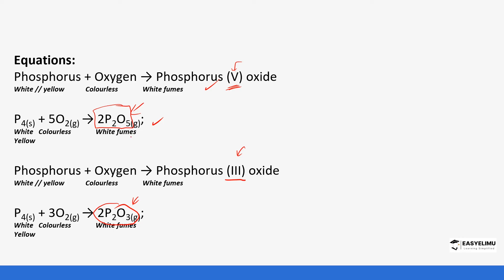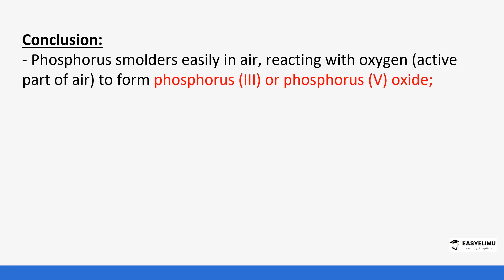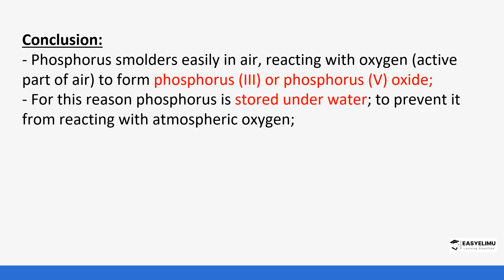So P₂O₅ is phosphorus(V) oxide and P₂O₃ is phosphorus(III) oxide — notice the 5 and the 3. These oxides dissolve in water to form phosphoric acids, which make the water acidic. This is the reason why phosphorus is usually stored under water — because it is very reactive and smolders in air very easily.